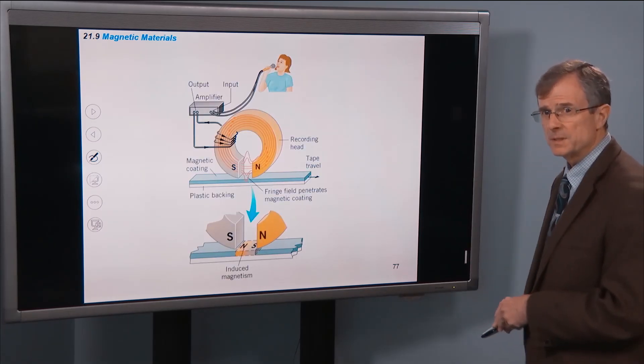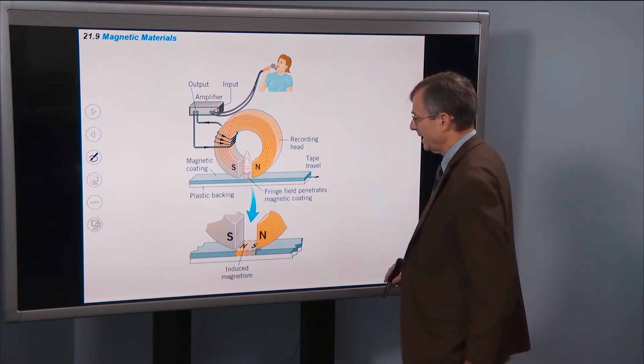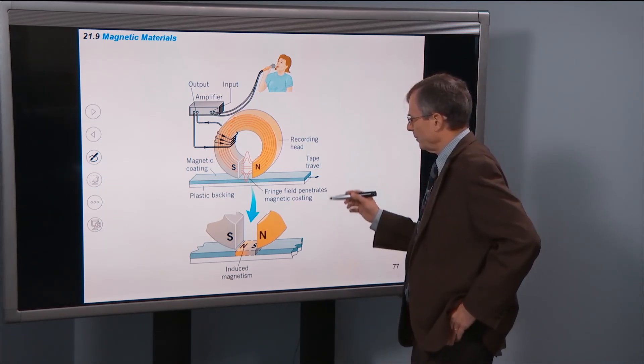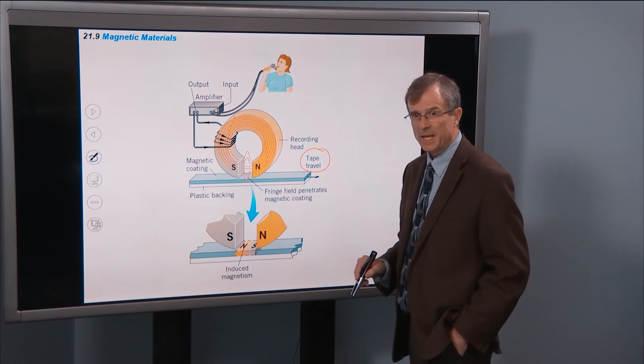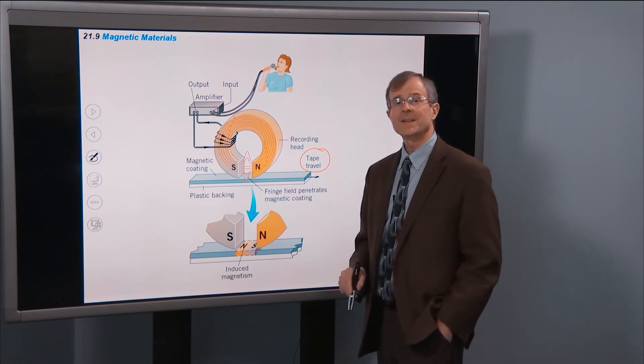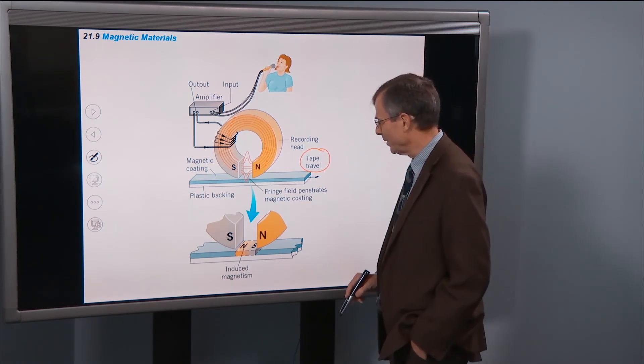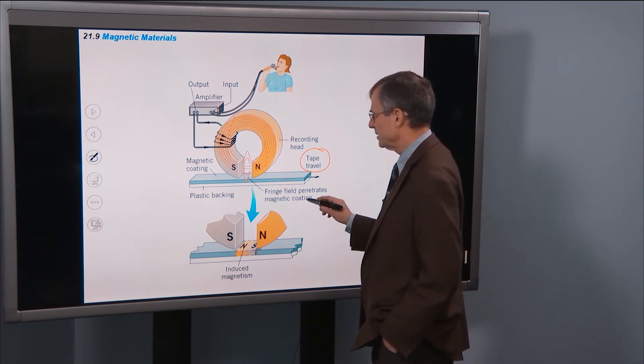This is important in magnetic recording. So if you have a tape, just a cassette tape, or 8-track tape, depending on how old you are, a VHS tape, it's a piece of plastic, plastic backing with a magnetic coating.